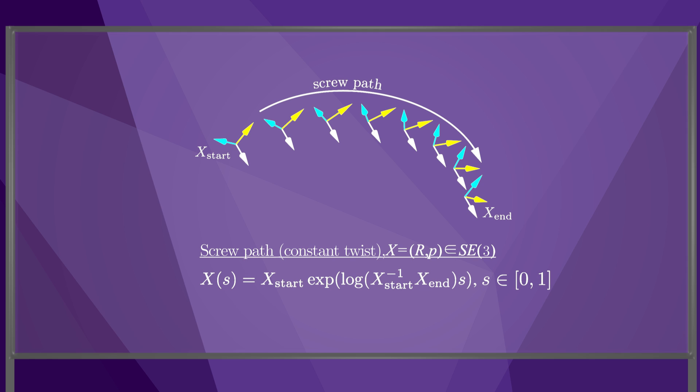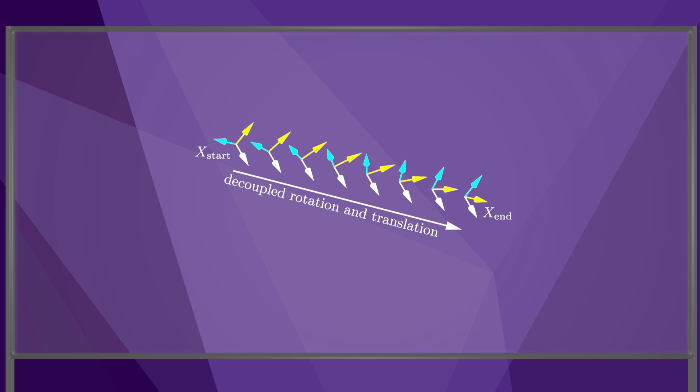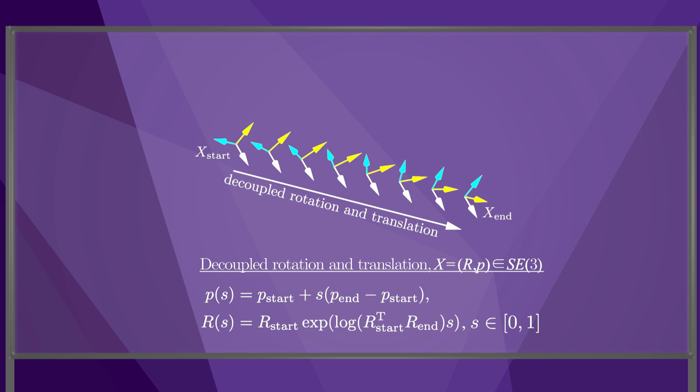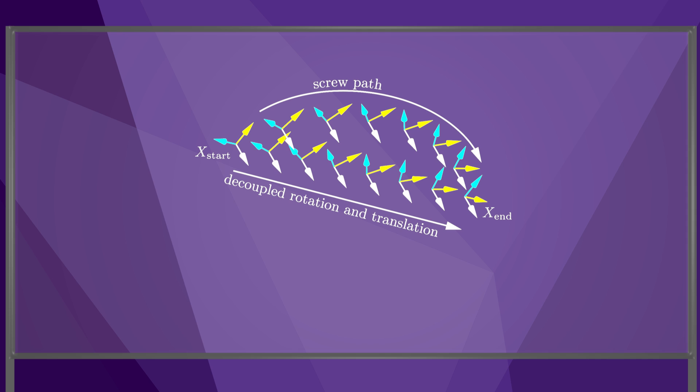Another type of path between x_start and x_end is one that decouples the rotation and translation. The origin of the frame follows a straight line and the rotation is about an axis fixed in the frame. For this type of path, the position coordinates p follow a straight-line path for coordinates, as discussed earlier, while the orientation satisfies a formula similar to that for a constant twist, except now just for the orientation components. These two types of paths are the most natural, simple paths between two frames.